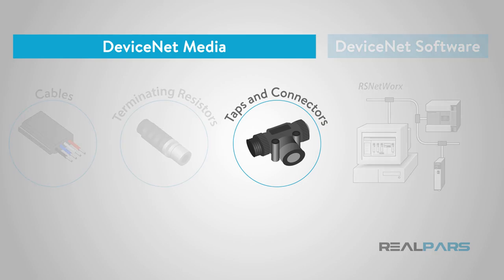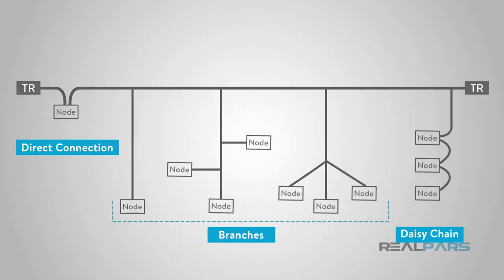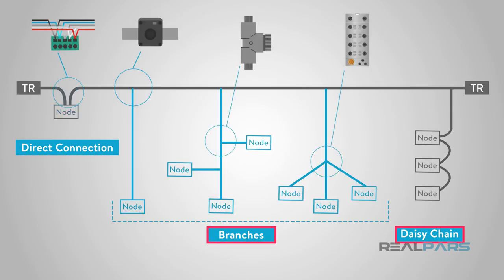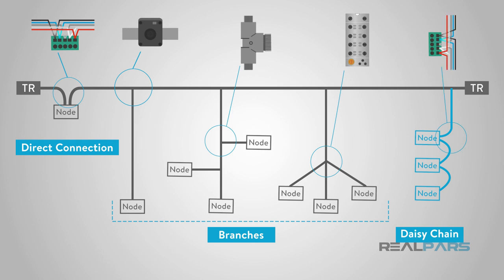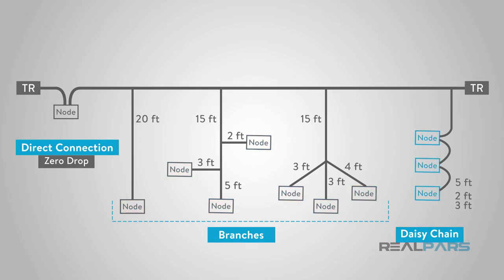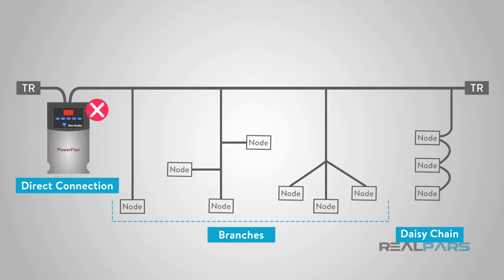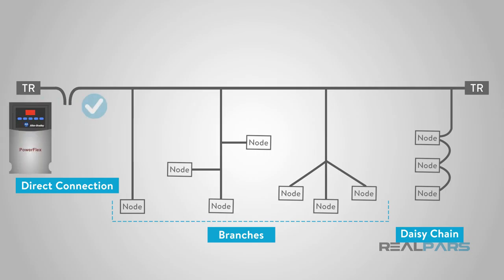You can connect the trunk line to devices using multiple types of taps and connectors. Devices can be attached either directly to the trunk line, by branching, or by daisy chaining them together. This choice impacts the total drop length calculation, as direct connections are considered zero drops while branching or daisy chaining adds to the calculation. These connections were specifically designed to allow devices to be replaced without disrupting the network.